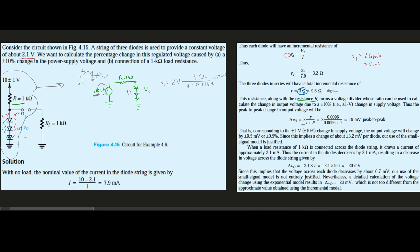The peak-to-peak output change is what we're solving for. The question asks for the effect of a ±10% change in supply voltage. The output voltage changes by 9.5 millivolts, or ±0.5%. Since this implies a change of about 3.2 millivolts per diode, our use of the small-signal model is justified.